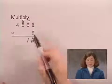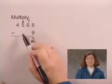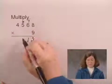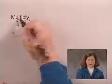And we multiply again. 9 times 5 is 45. 45 plus 6 is 51. We'll write the 1 here and the 5 above the thousands.